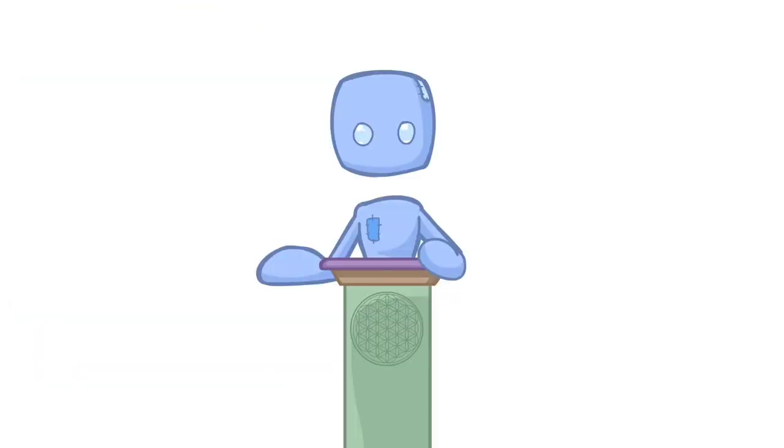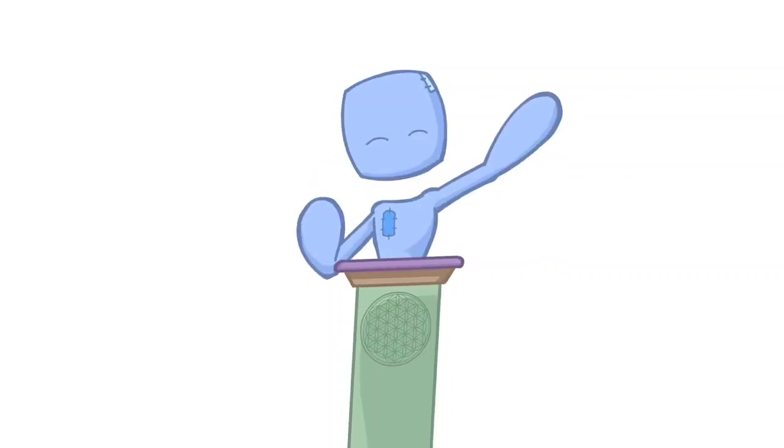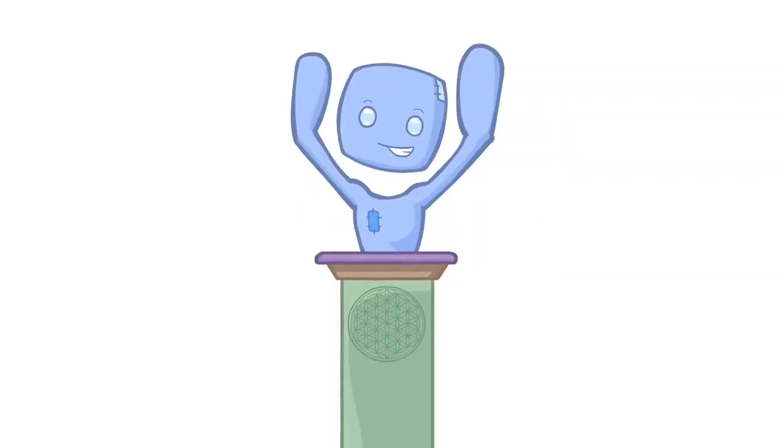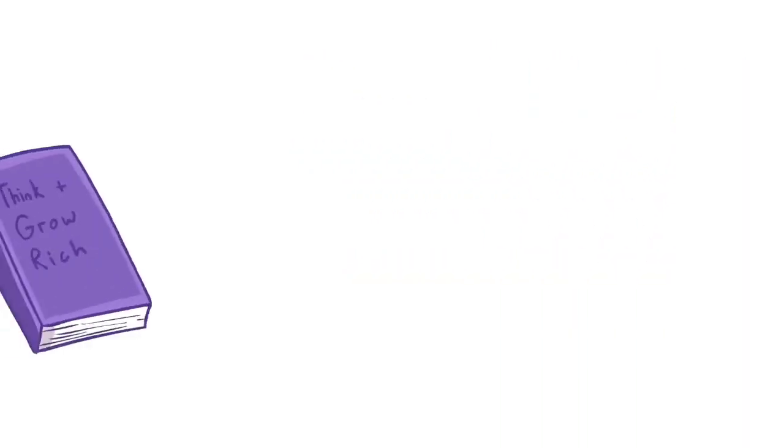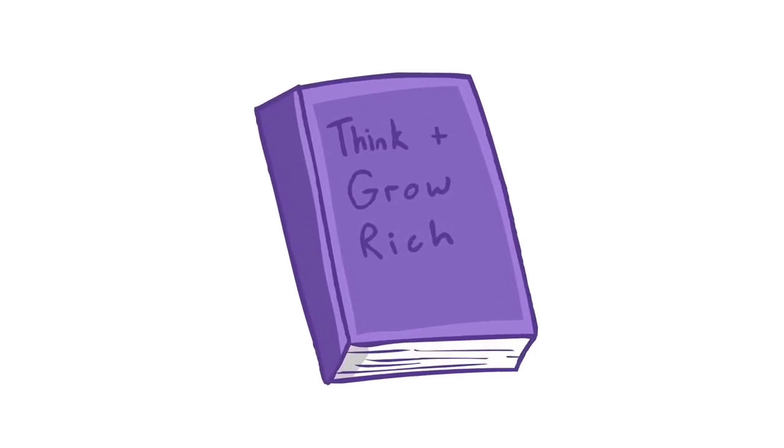He concludes the introductory chapter by informing us that if we can learn to follow the 13 principles of thinking and growing rich, literally anyone can lead a wealthy and prosperous life. Going over the principles takes up the majority of this book, but allow me a moment to run through them with you.